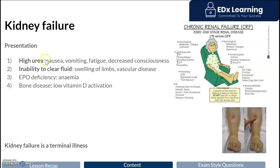High urea also causes effects in the brain, where it can cause weakness, confusion, and eventually a coma if not cleared via dialysis. Remember, the kidney is also important in hormonal control, especially of red blood cell production, so you may also see mild anemia with kidney failure. Since the kidney is involved in vitamin D activation, you may also see low vitamin D.